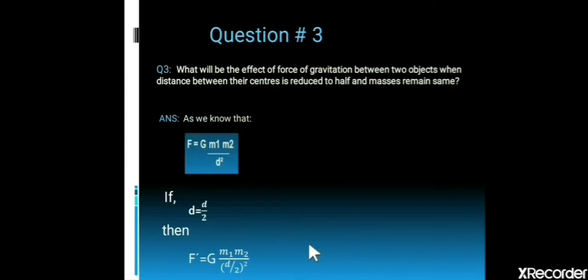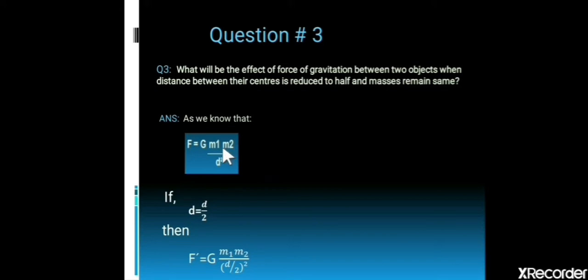Question 3: What will be the effect on the force of gravitation between two objects when the distance between their centers is reduced to half and the masses remain the same? Consider two objects of mass m1 and m2 with distance d between them. According to Newton's law of gravitation, the gravitational force F equals G × m1 × m2 divided by d squared.